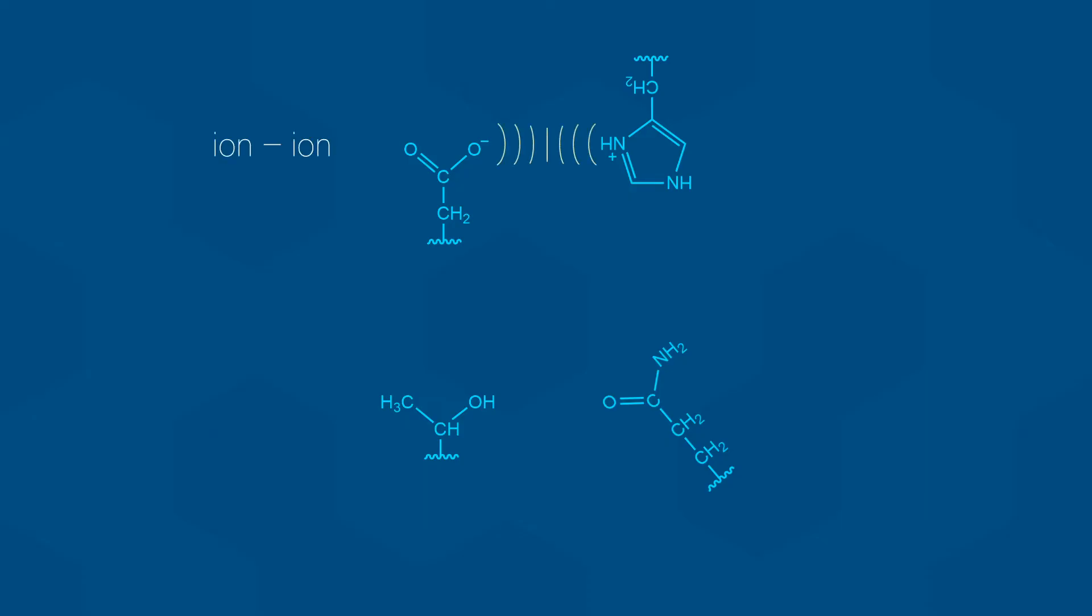For example, the ion-to-ion interaction between an aspartate and a histidine, or the hydrogen bond between a threonine and a glutamine. And so, we come to the final level of protein structure.